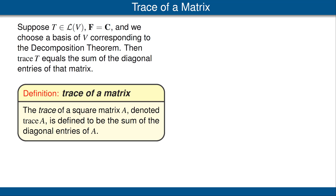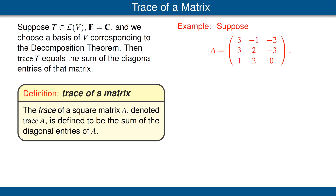To investigate this question, we define the trace of a square matrix A, denoted trace(A), to be the sum of the diagonal entries of A. For example, if A is the matrix shown here, the diagonal entries — shown in red — are 3, 2, and 0, so the trace is equal to 5.